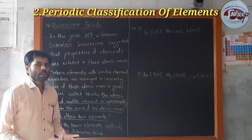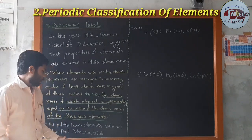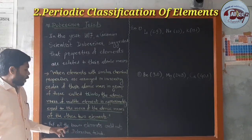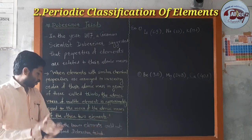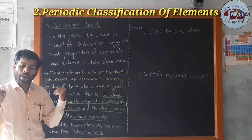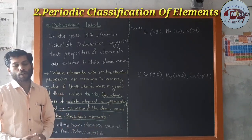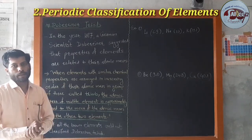However, all the known elements could not be classified under Dobereiner's Triads — not all elements could obey Dobereiner's Triads.